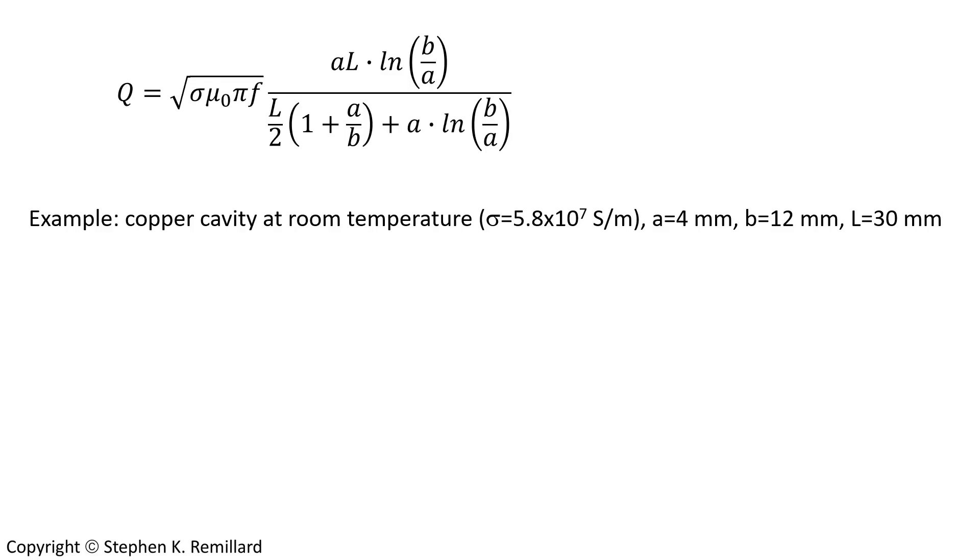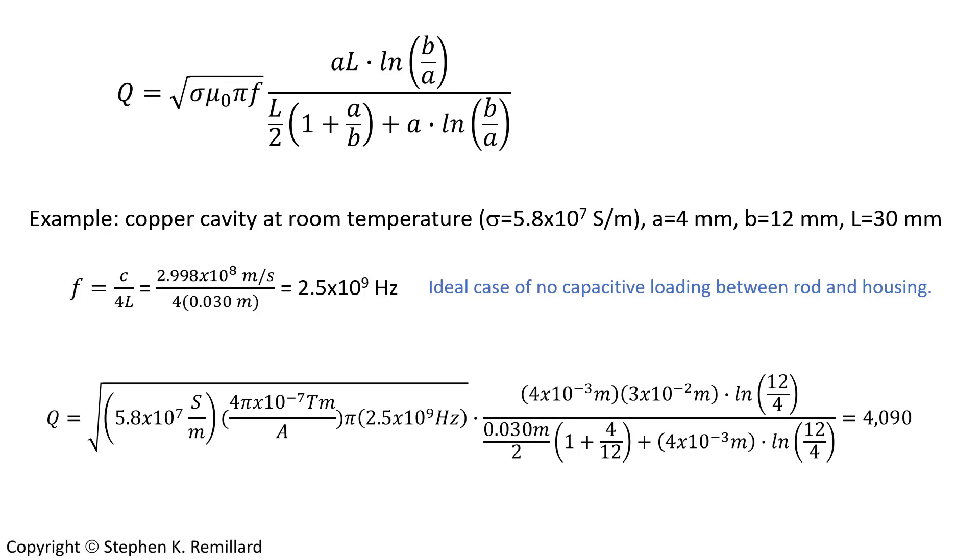Let's go ahead and calculate the Q factor for this resonator. The rod radius is 4 millimeters, the housing radius is 12 millimeters, the length of the rod is 30 millimeters, and everything is copper at room temperature. The frequency should be c over 4L if there's no loading of the rod, and that comes out to two and a half gigahertz. So I'll call it the unloaded frequency, or the ideal case frequency, because there's no capacitive loading. Use that frequency in your calculation for the Q, plugging in all these other numbers, and you get 4090. That's the unloaded Q of this particular quarter wave resonator.